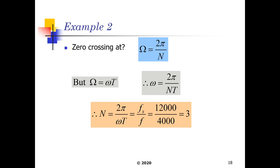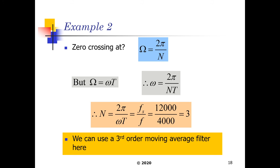So we just take the sampling frequency, which was 12 kHz, and divide by the null frequency, which was 4000 Hz, or 4 kHz, and we get 3. So N in this case is going to work out to be 3, which is going to be our third order moving average filter.